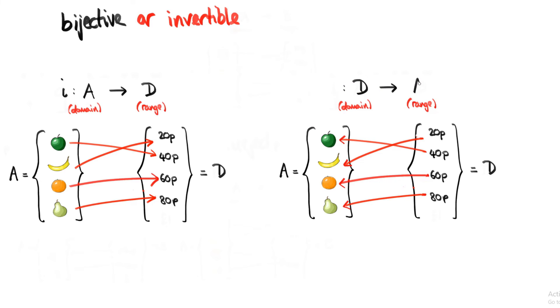And that new function is called the inverse of i, or i inverse. And this new function takes as inputs elements from the set D and produces as outputs elements of the set A. So it's answering the question, what costs 40p? In which case the answer would be apple.